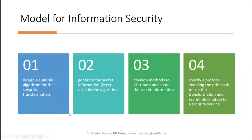The model for information security involves four steps: first, design a suitable algorithm for secure transformation; second, generate the secret information — keys — used by the algorithm; third, develop methods to distribute and share the secret information or keys; and fourth, specify a protocol enabling the principals to use the transformation and secret information for the security service.